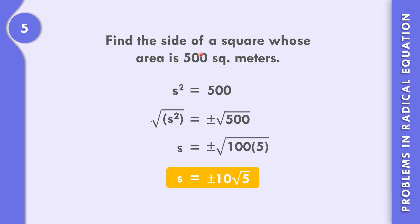So the side of the square could be positive 10 square root of 5 or negative 10 square root of 5. Obviously, a side cannot be negative, so the side of the square is 10 square root of 5.